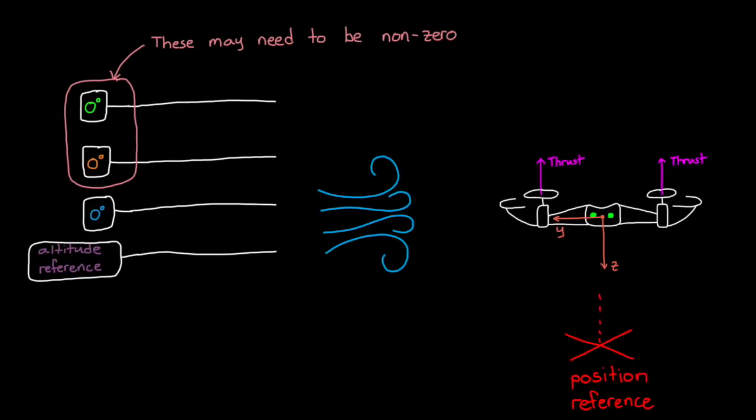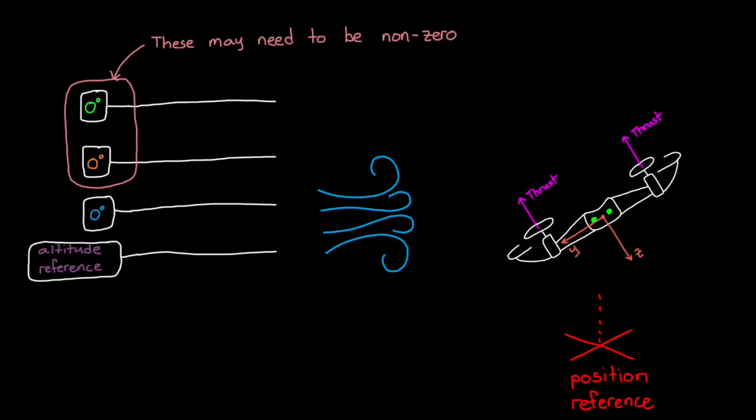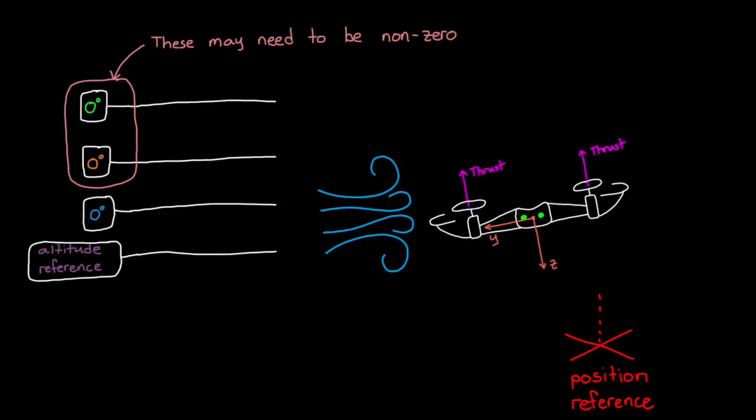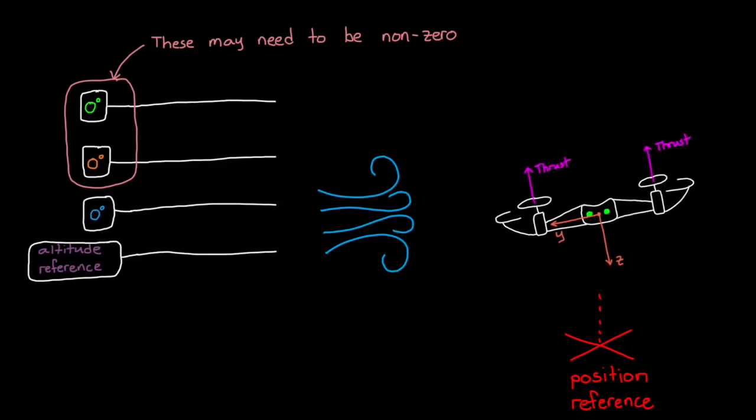For example, if we want to hover in a strong constant wind, then the drone will have to lean into the wind at some angle to maintain its ground position. So rather than specifying that we want level flight, really what we need is a ground position controller, something that we'll recognize when the drone is wandering off and make the necessary corrections to bring it back to the reference point X and Y.